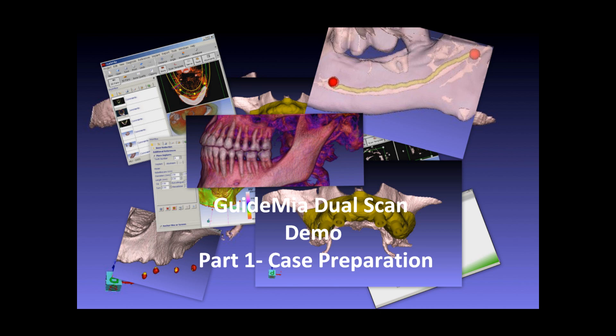By dual scan, we mean that the patient is CT scanned wearing a radiographic guide, and then the guide itself is scanned. In the case preparation, we will register the two scans, segment the bone structure, create a radiographic model, and then track the nerve channels.